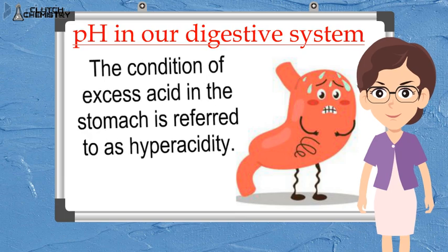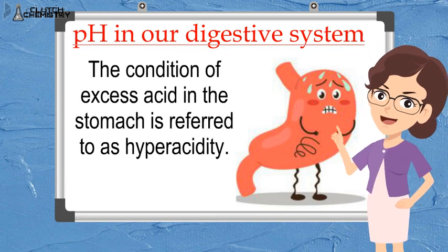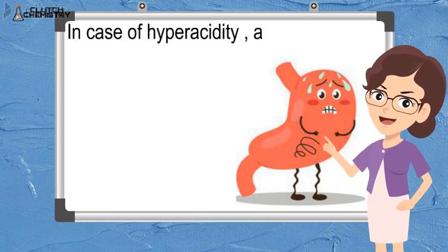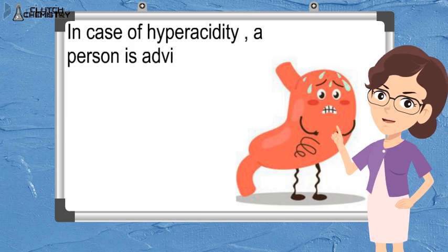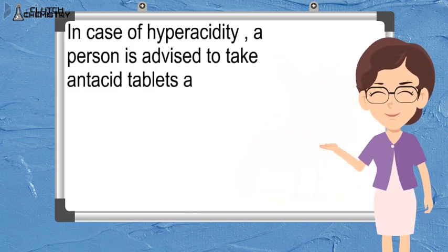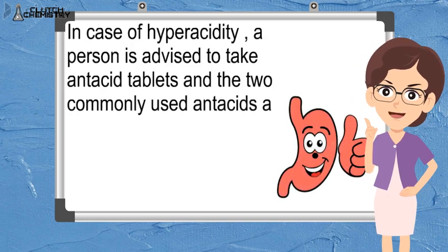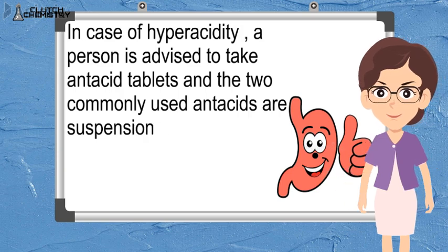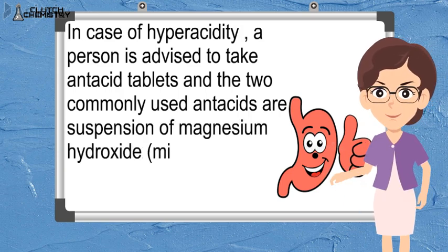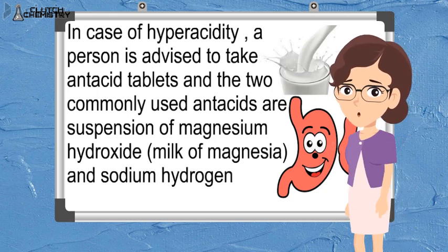This condition is referred to as hyperacidity. In this condition, the person is advised to use a base, known as antacids. What do these antacids do? They neutralize the excess acid. For example, milk of magnesia contains magnesium hydroxide, which is a mild base, so it can also be used. It is normally found in milk, so drinking milk can also reduce acidity.